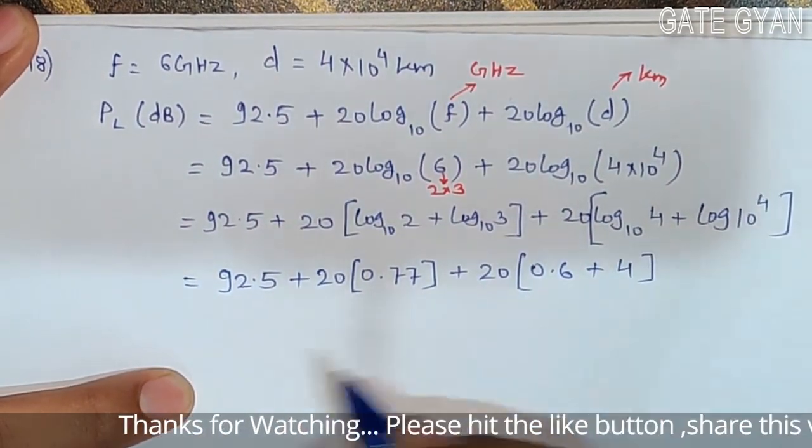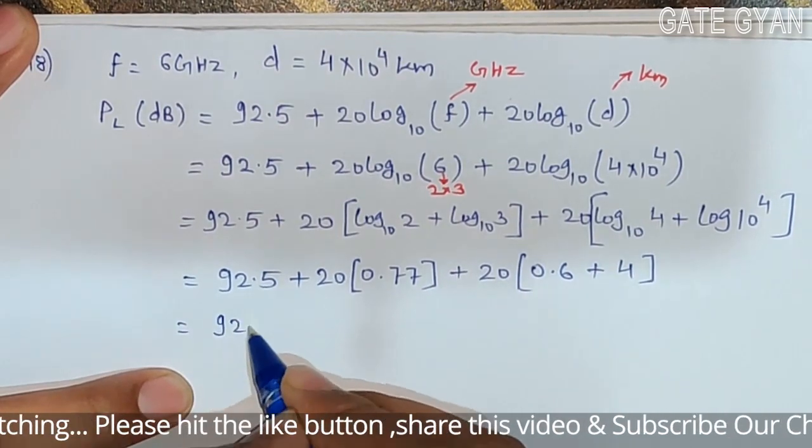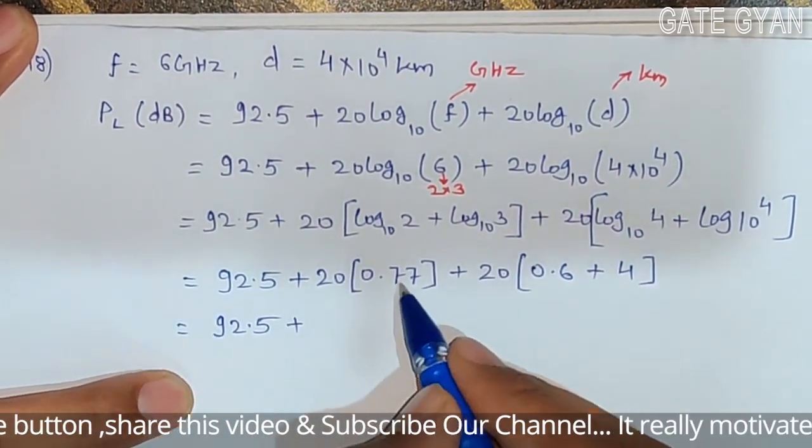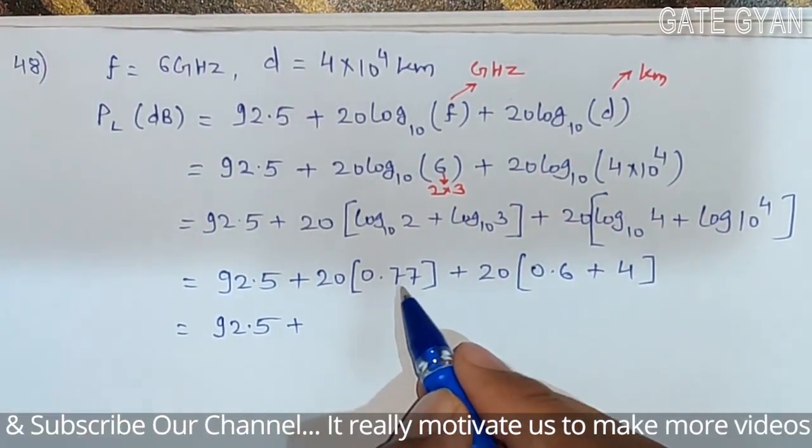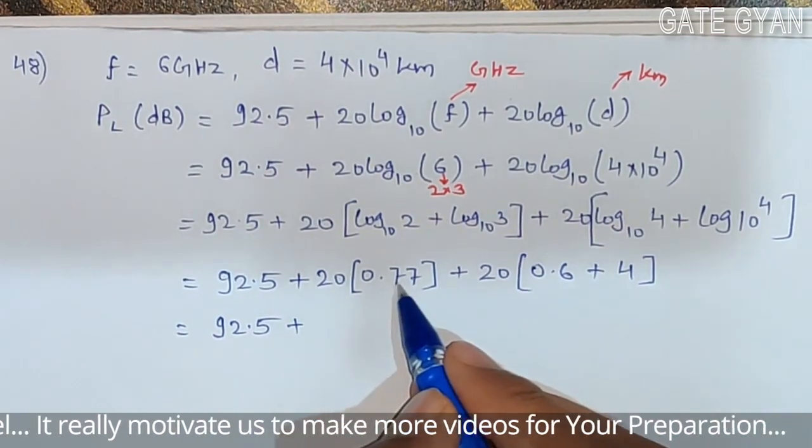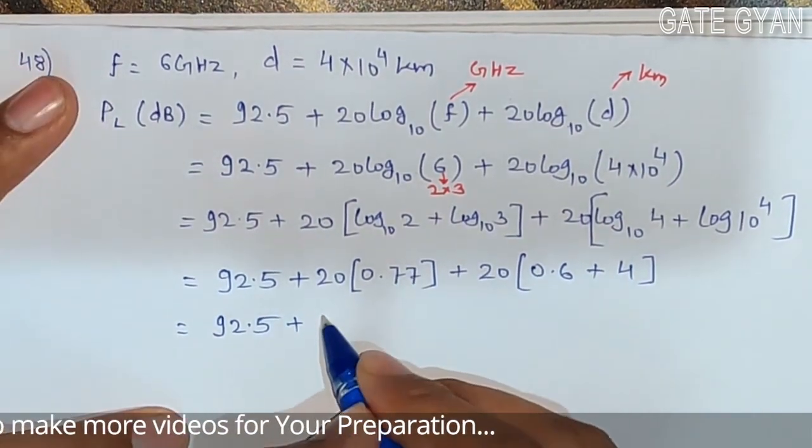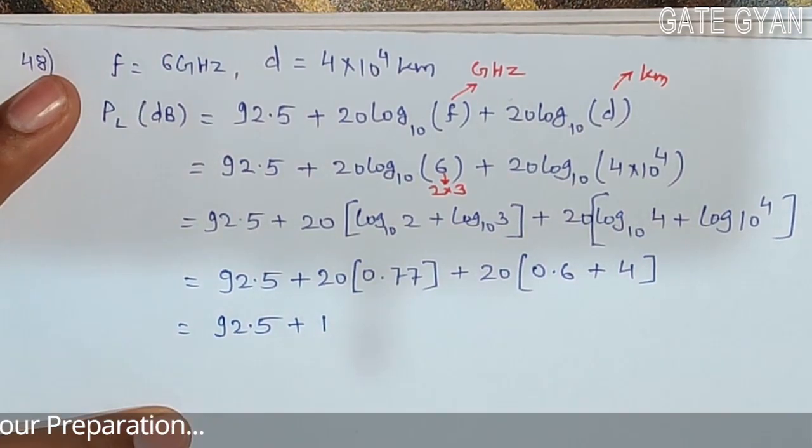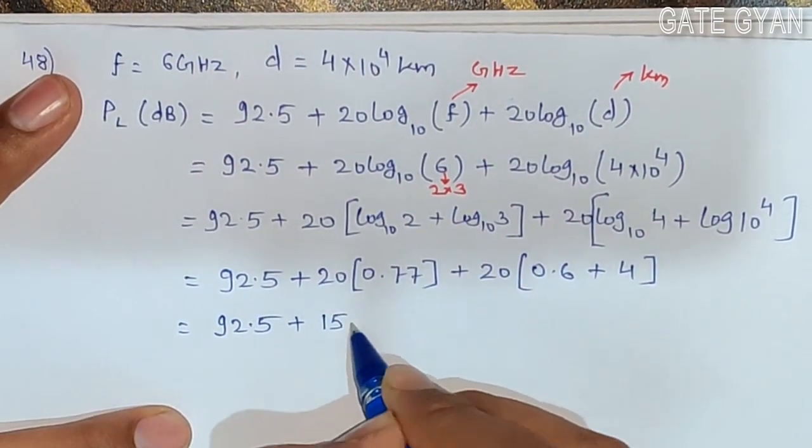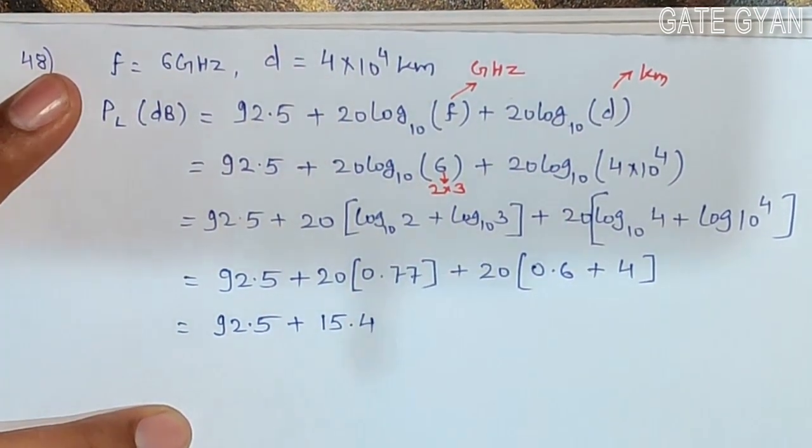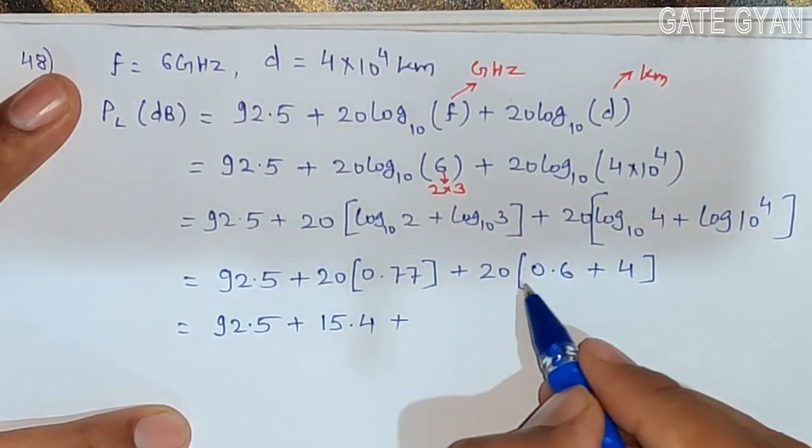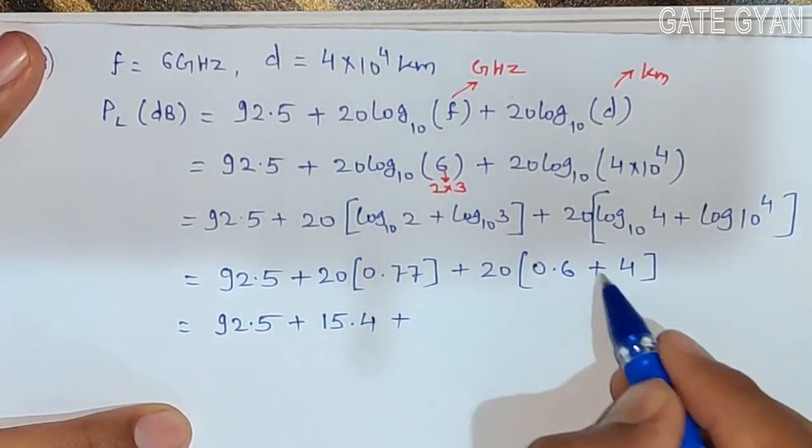Further solve: 92.5 plus here it will be 7.7, and you will find that it is approximately equal to 15.4. This is all in dB only.